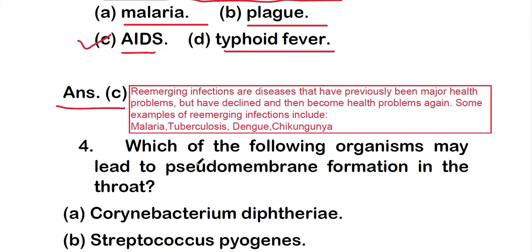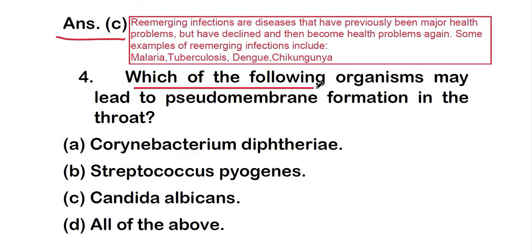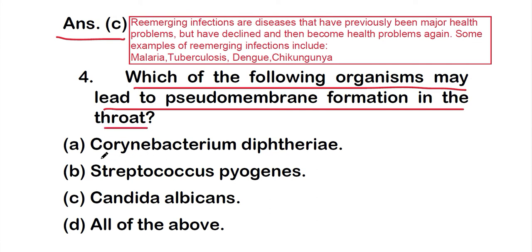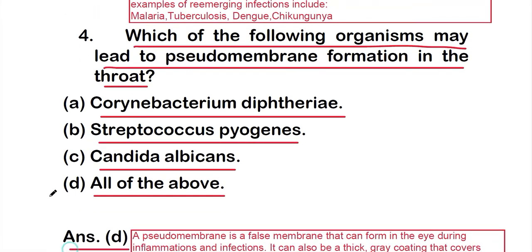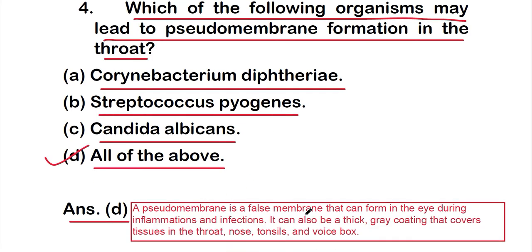Question 4: Which of the following organisms may lead to pseudomembrane formation in the throat? Options: option A: Corynebacterium diphtheriae; option B: Streptococcus pyogenes; option C: Candida albicans; option D: all of the above. The right answer is option D. A pseudomembrane is a false membrane that can form in the eye during inflammations and infections, or as a thick gray coating covering tissues in the throat, nose, tonsils, and voice box.